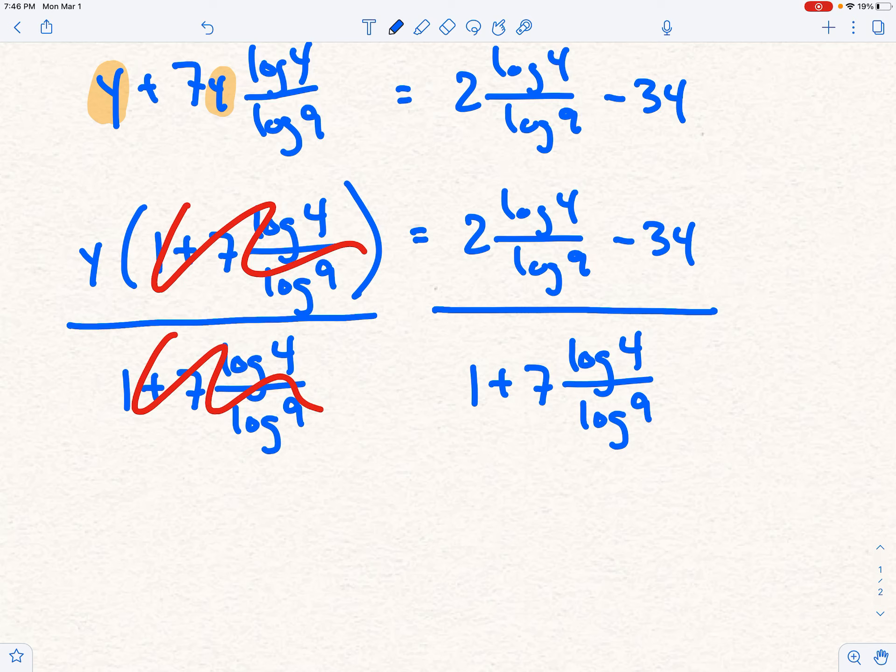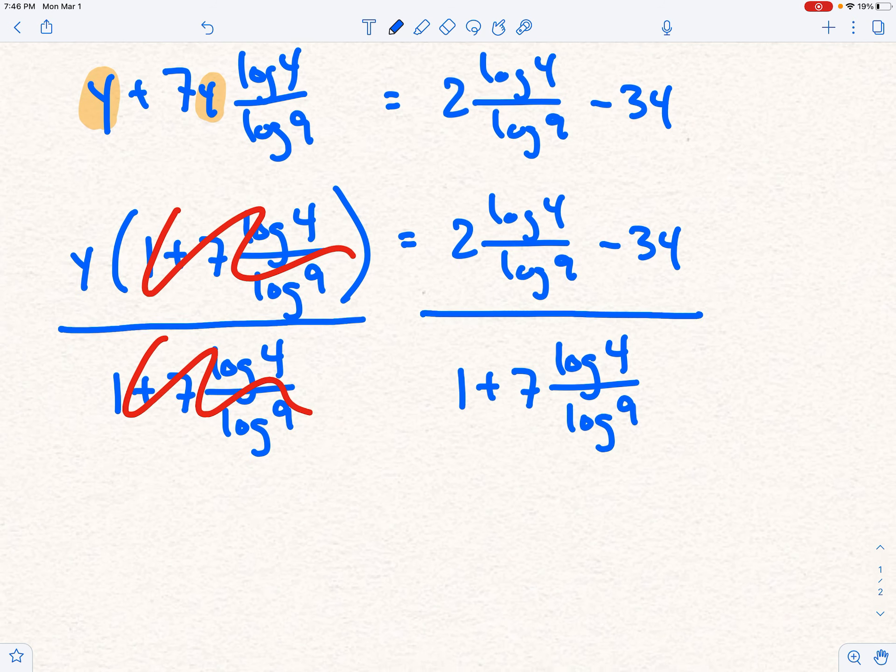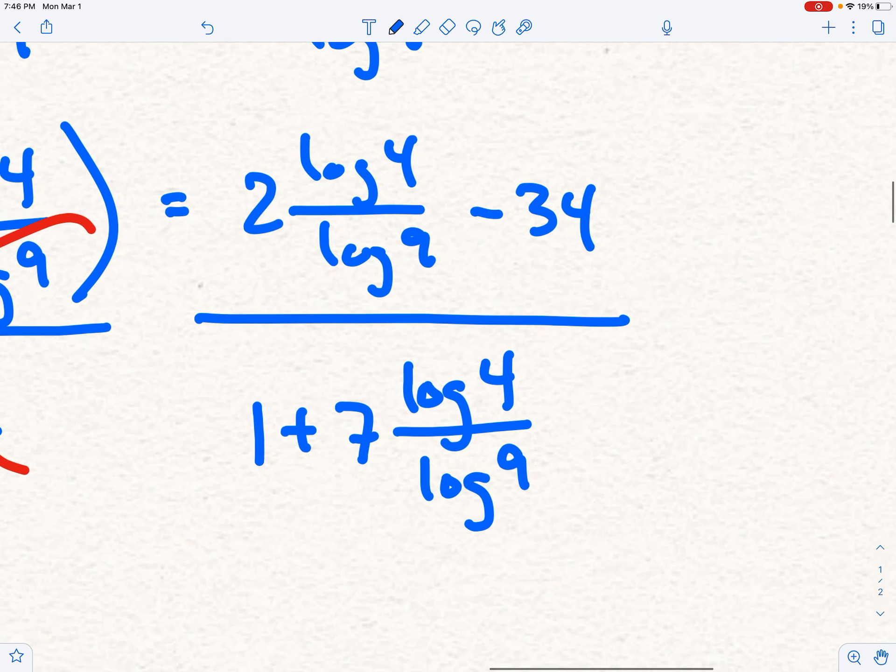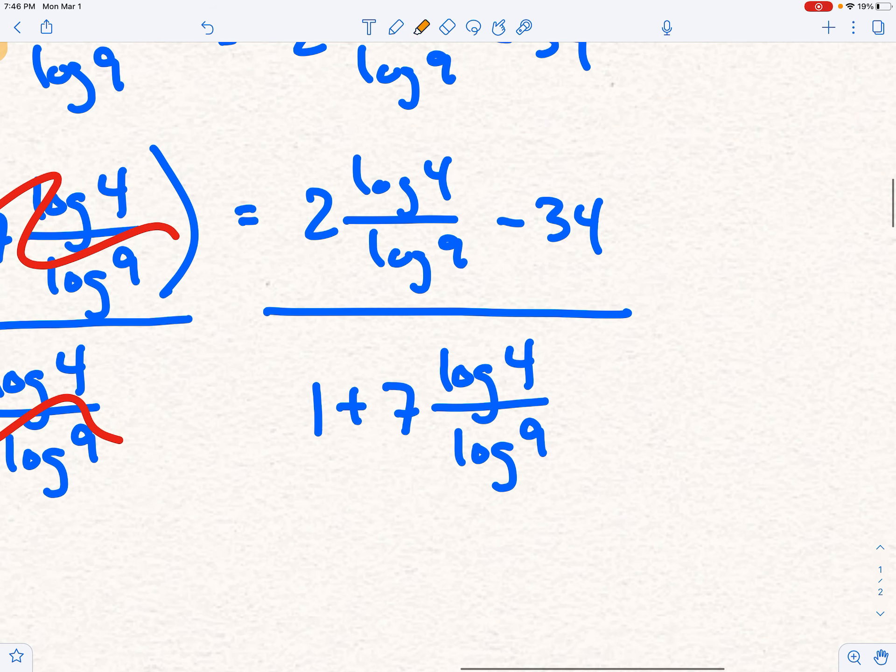So the only piece that I would do with the calculator is to be careful with this. So I have y equals, and forgive me for not rewriting the entire thing, but the video is already long enough. And I'm simply going to start by typing this whole thing into a calculator. I would type two times, and then I would do log four divided by log nine. I'd probably press equals, and then I'd press minus 34, and then I'd press equals again.